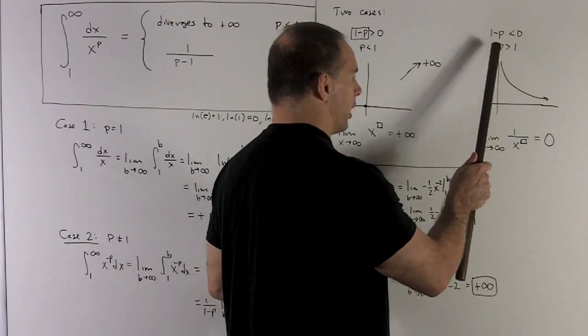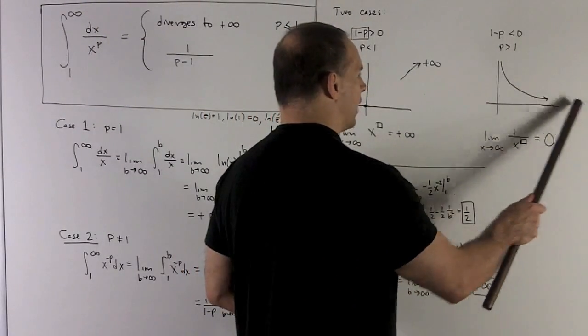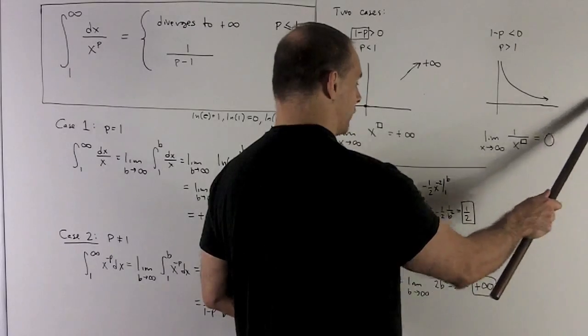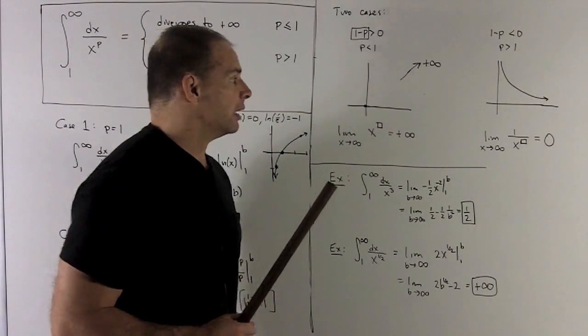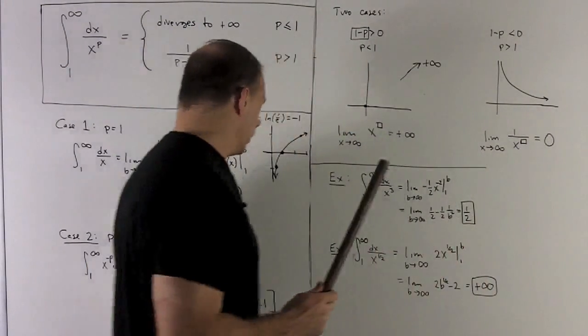These functions are going to look like this. They're going to come down, and then there's going to be a horizontal asymptote as these things get driven down to 0 as we go off to infinity. So the limit here is going to be 0.